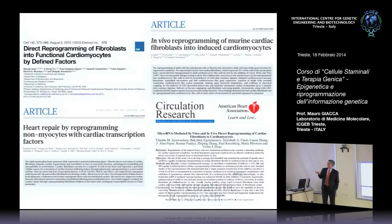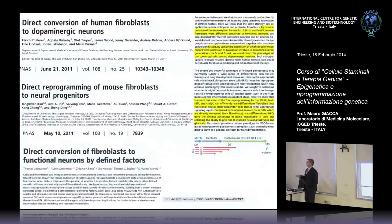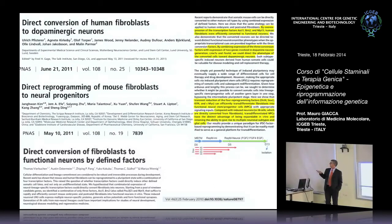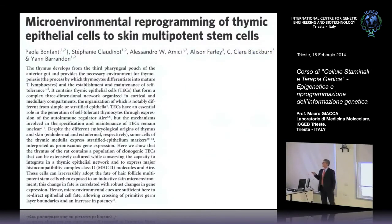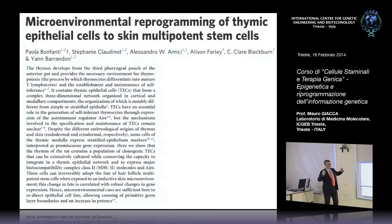Posso prendere un fibroblasto e, invece di farlo diventare una cellula embrionale staminale, farlo diventare un cardiomiocita inserendo tre o quattro fattori diversi. Oppure posso prendere un fibroblasto e farlo diventare un neurone dopaminergico inserendo solo tre fattori di trascrizione. O ancora prendere una cellula epiteliale del timo e farla diventare una cellula staminale dell'acuto trasferendo una serie di fattori. Quindi c'è questo concetto che posso riprogrammare un tipo cellulare in un altro.